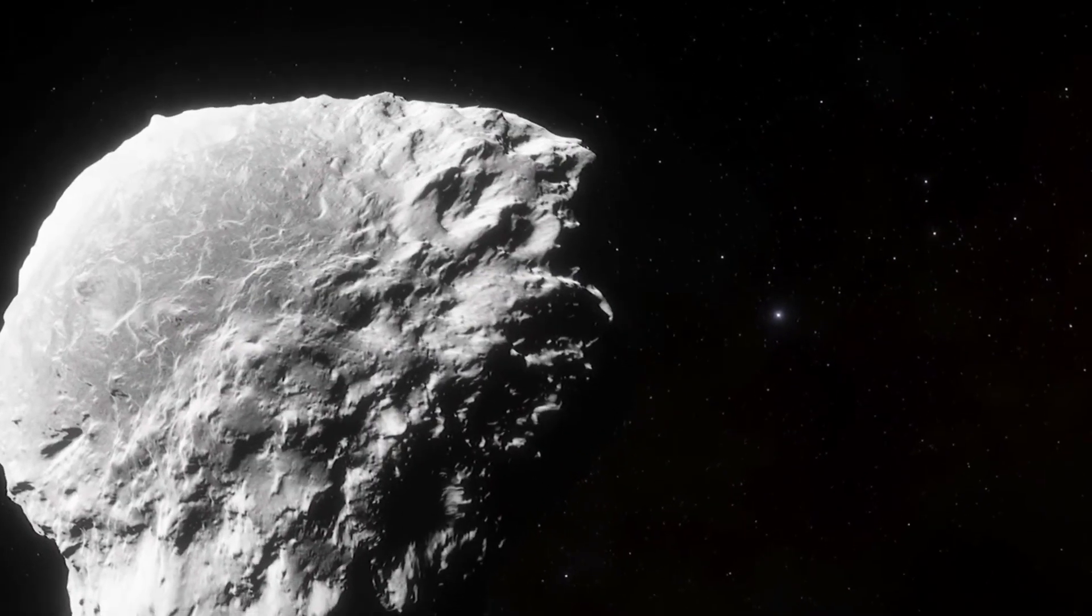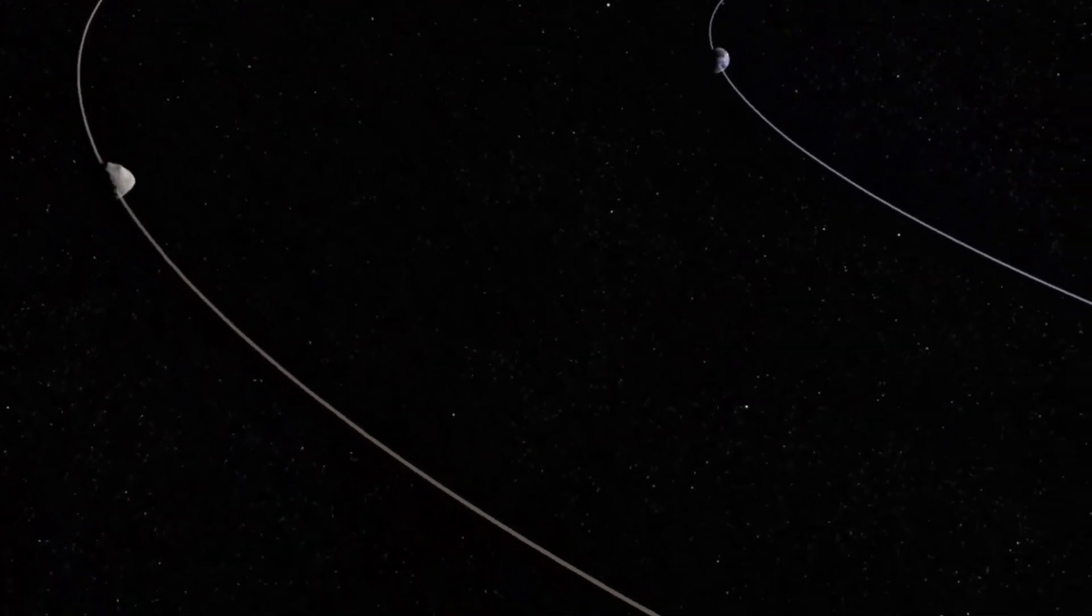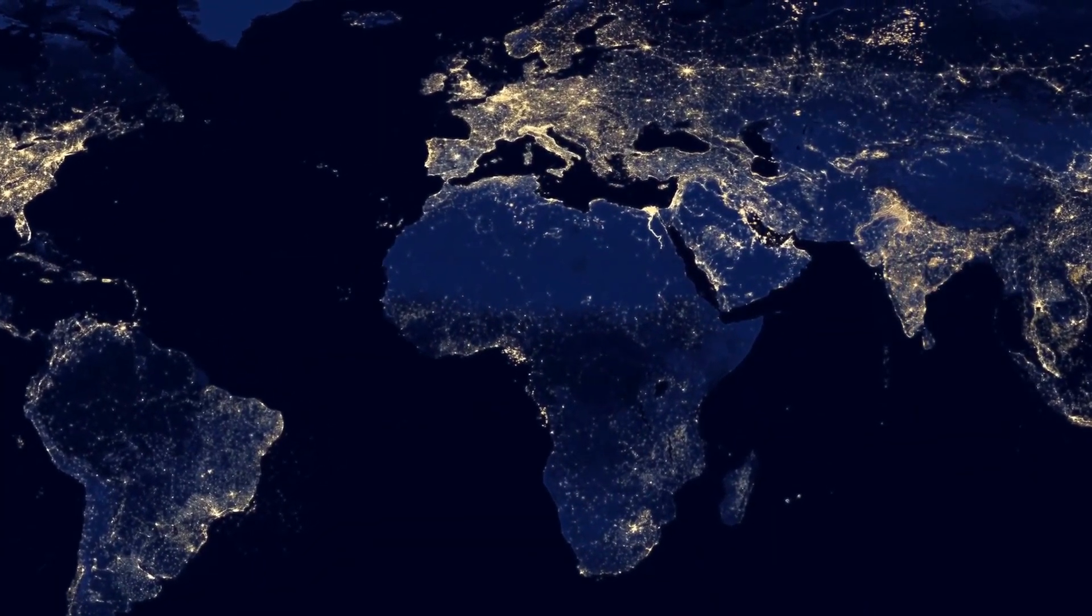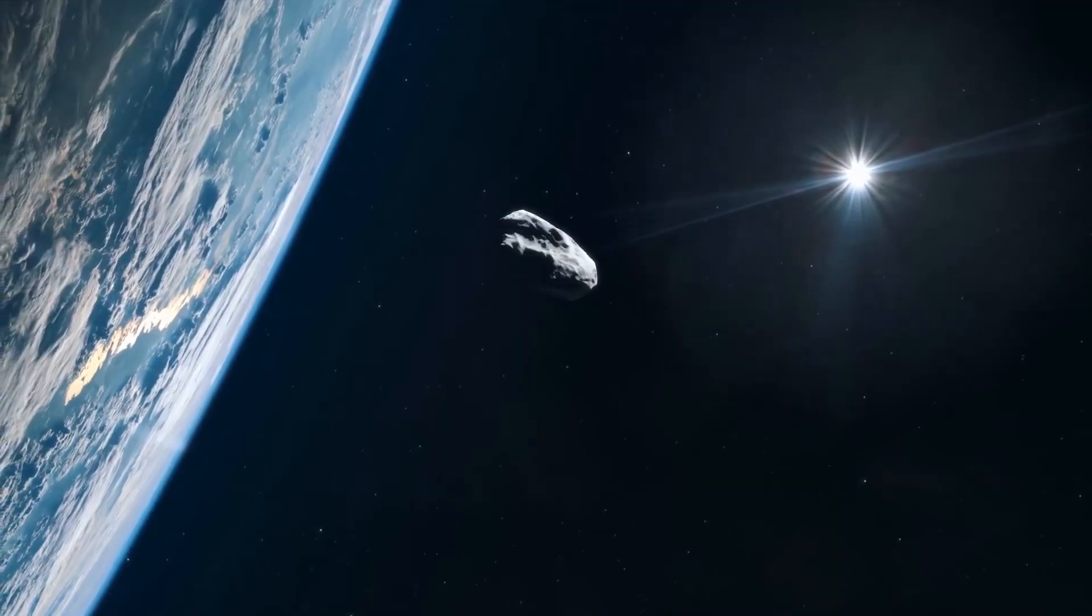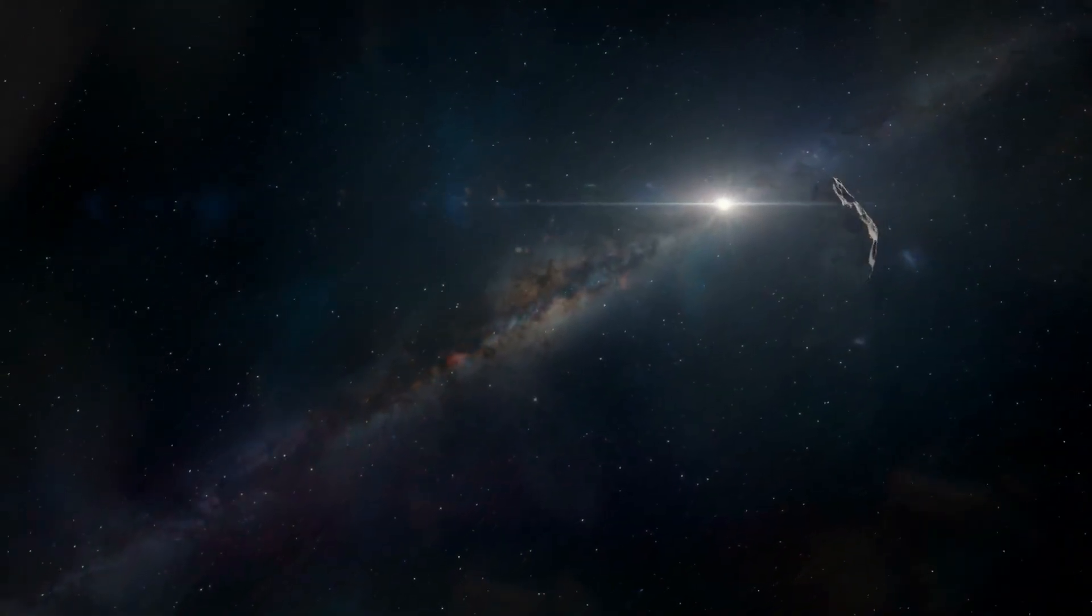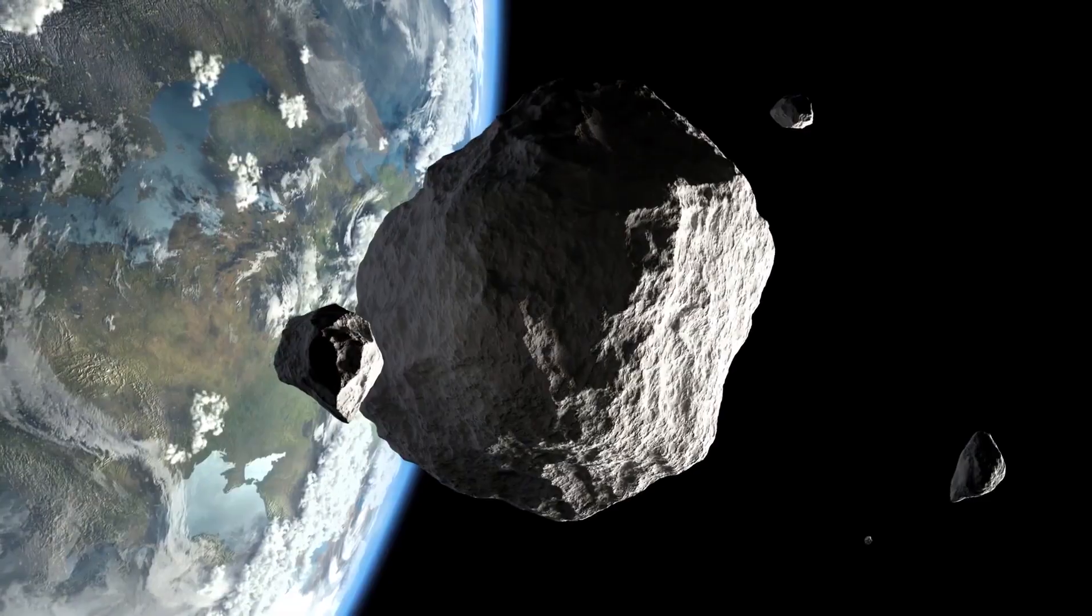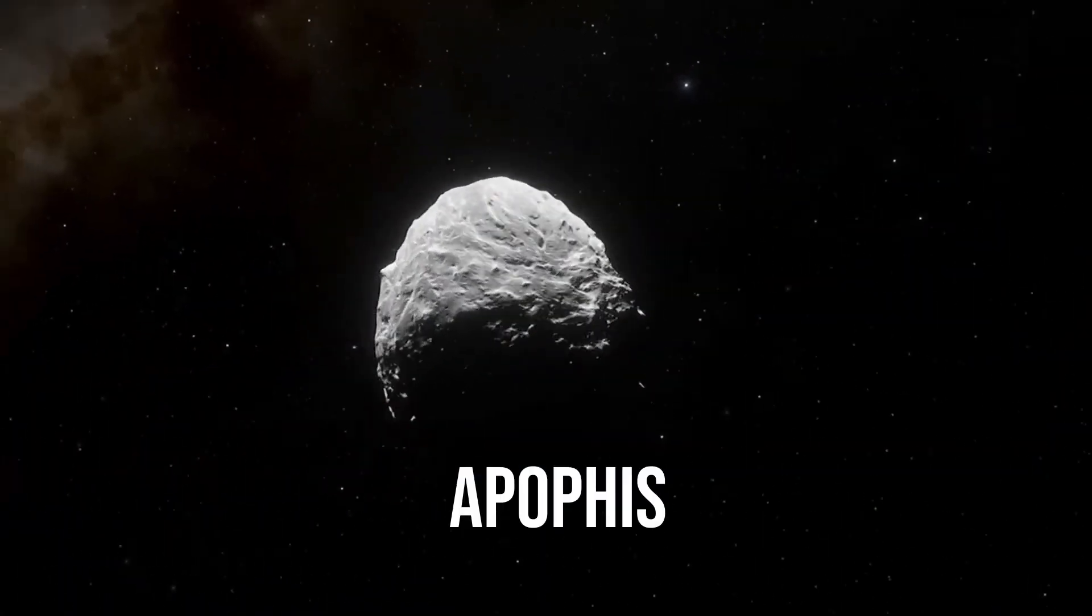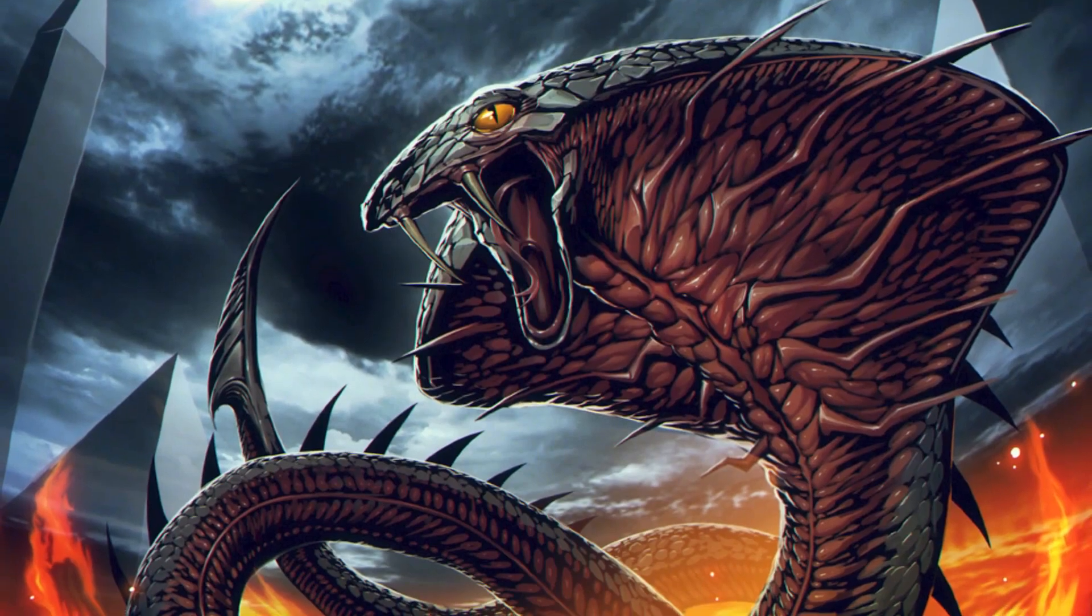This asteroid was discovered by experts at the Kitt Peak Observatory in Arizona in 2004. Initially, the asteroid received the name 2004 MN4. However, when scientists discovered that the asteroid's flight path could lead it to collide with our planet, the celestial body acquired a proper name. It was named Apophis in honor of the ancient Egyptian monster deity Apep. The Greeks pronounced it Apophis, a terrible serpent seeking to destroy the sun and all living things.